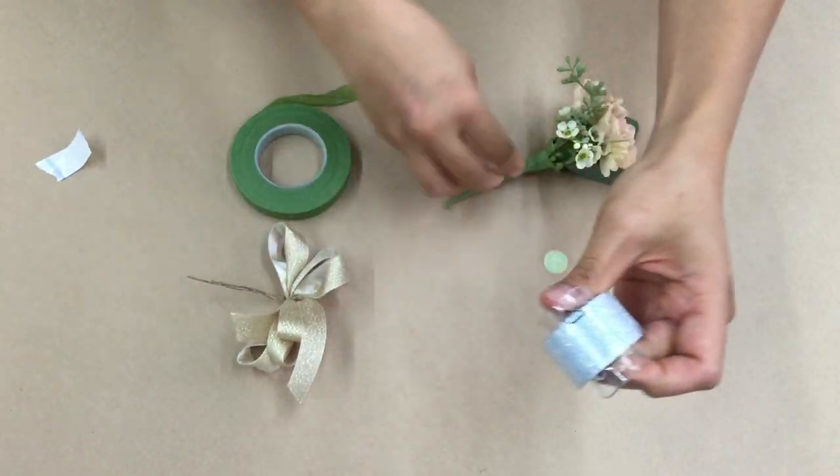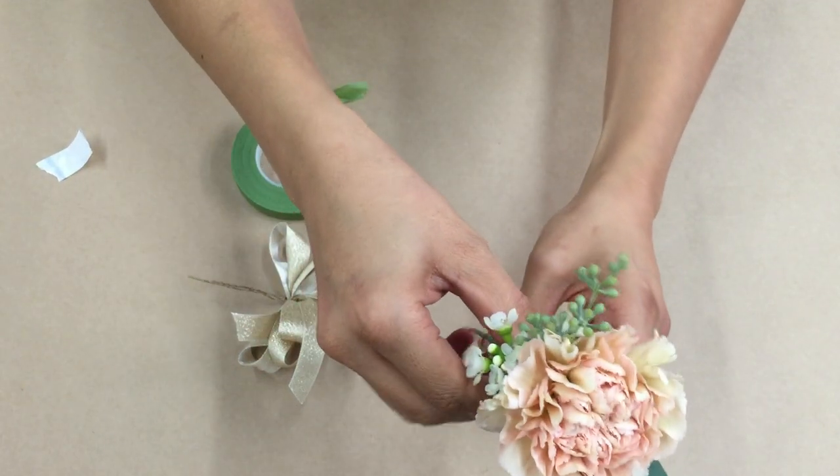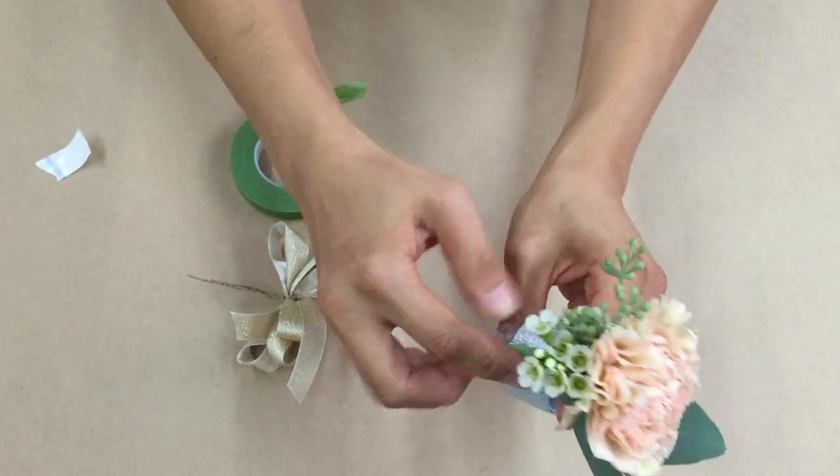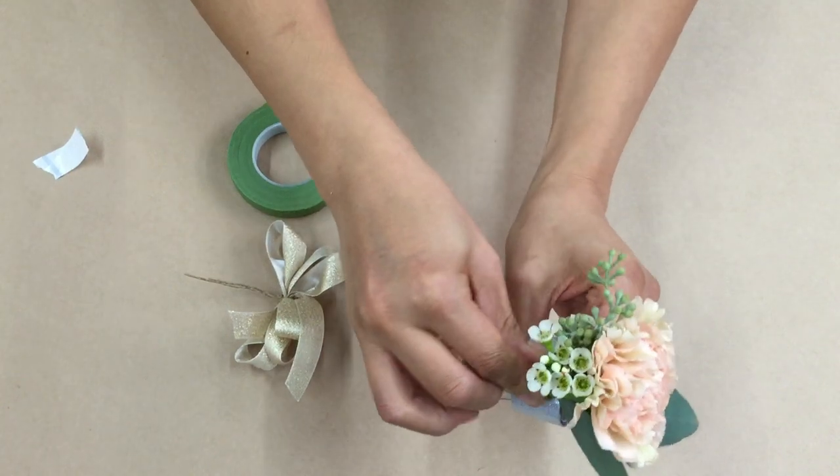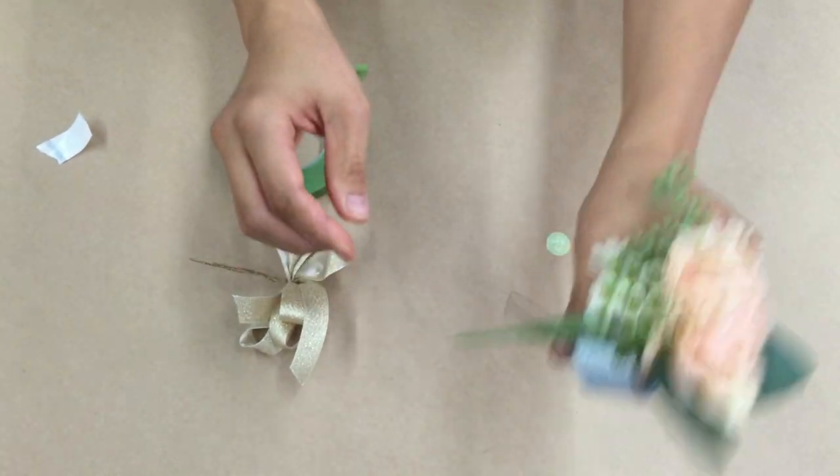Hold it there as you insert the corsage through the loop and down on top of that glue dot. Press it down so that it's pretty sturdy.